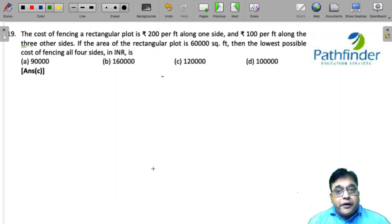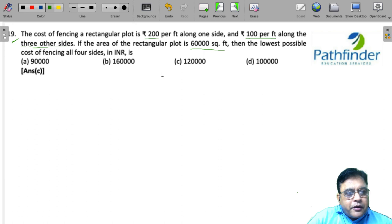Cat 21, slot 3, quantitative aptitude, question number 19. The cost of fencing a rectangular plot is rupees 200 per feet along one side and rupees 100 per feet along the three other sides. If the area of the rectangular plot is 60,000 square feet, then the lowest possible cost of fencing all the four sides in INR is.